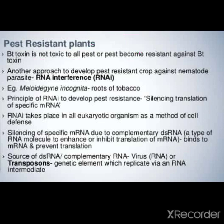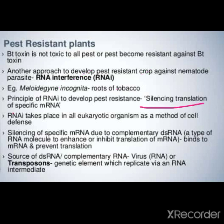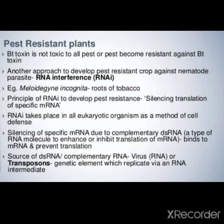Ees case de vich ek hor new technology hai - that is RNA interference, jo ki use kiti jandhi hai. It is another approach to develop pest resistance crop against nematode parasite. Mostly ye nematode parasite di against use kiti jandhi hai. So, example ledha hai - Meloidogyne incognita, ee ek nematode hai, jo ki as a parasite act kar da hai, and tobacco di roots de vich present hun da hai, unha nu khandha hai, kaffi huge amount of loss create kar da hai. RNA interference is a method of self defense present in all eukaryotic organisms.